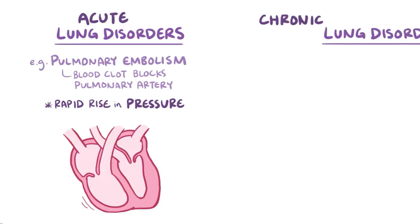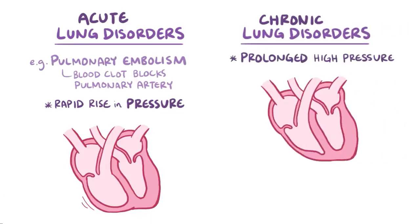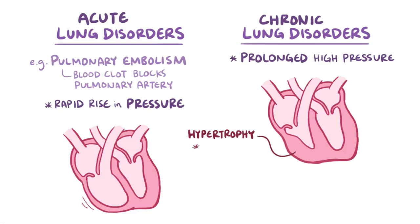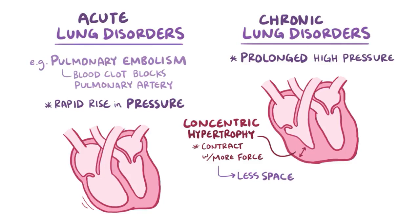In chronic lung disorders, prolonged high pressure causes the right ventricle to hypertrophy, or grow, so it can contract with more force. The hypertrophy here is concentric, which means that new sarcomeres are added in parallel with the existing ones. So as the heart muscle wall enlarges, it crowds into the ventricular chamber space, resulting in less room for blood to fill the heart, and that leads to diastolic heart failure.